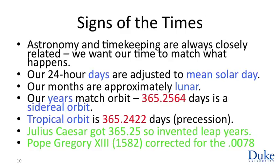Our definition of a year is designed to match the orbit. A year is 365 days, but the Earth orbits the sun once every 365.2564 days — a little over a quarter of a day. This is the sidereal orbit: the time it takes the Earth to return to the same position relative to the sun, or equivalently the time it takes the sun to return to the same position relative to the stars.